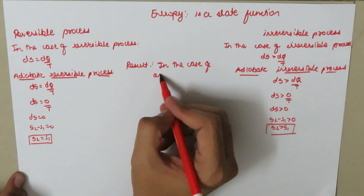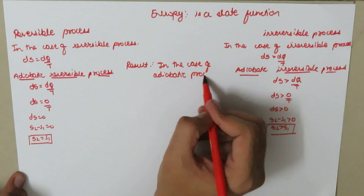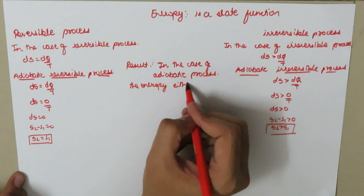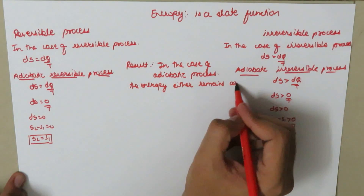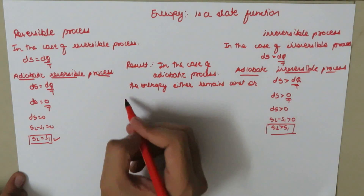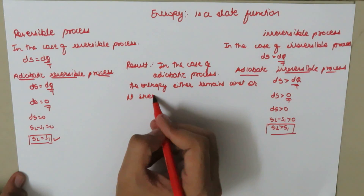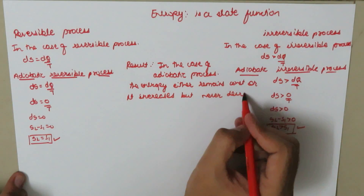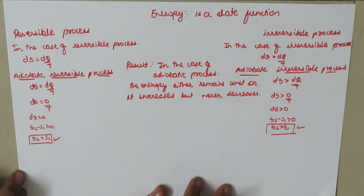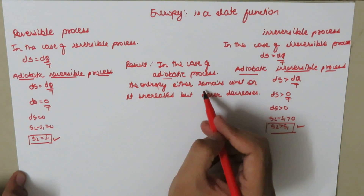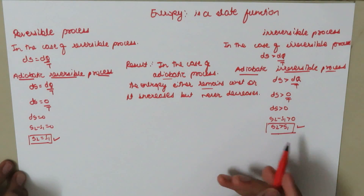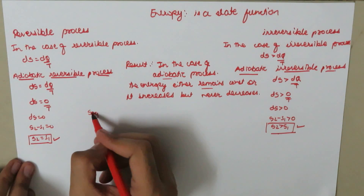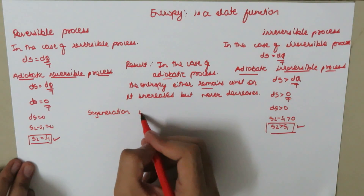From these two equations we conclude that in the case of the adiabatic process, the entropy either remains constant — from the reversible case — or it increases — from the irreversible case — but it never decreases.